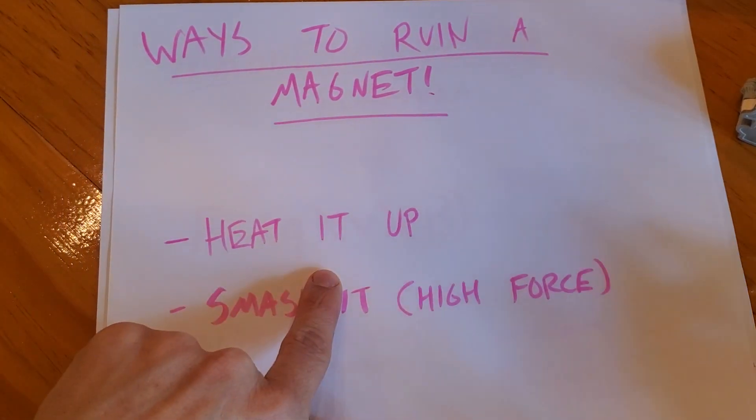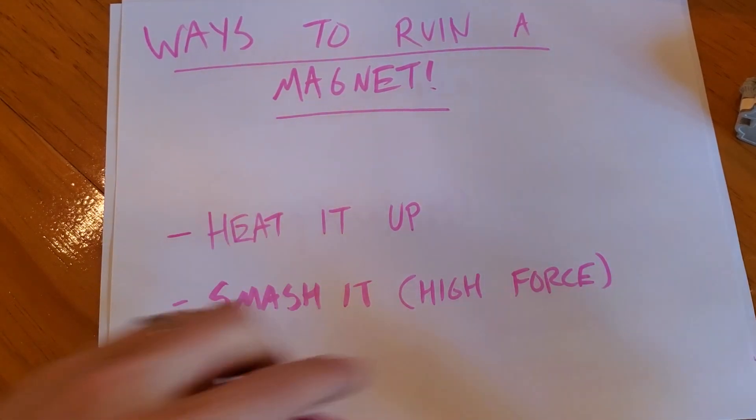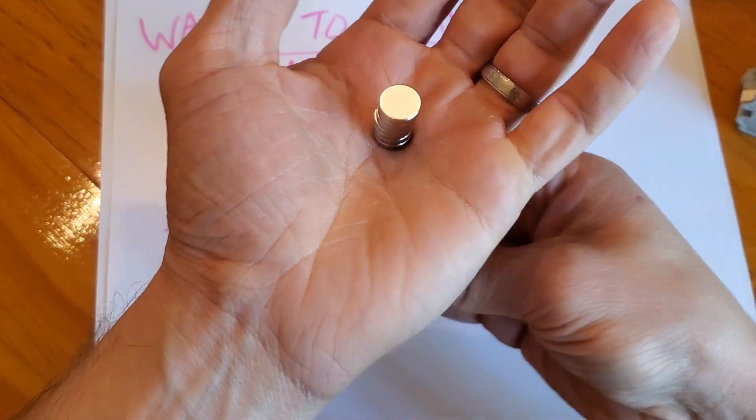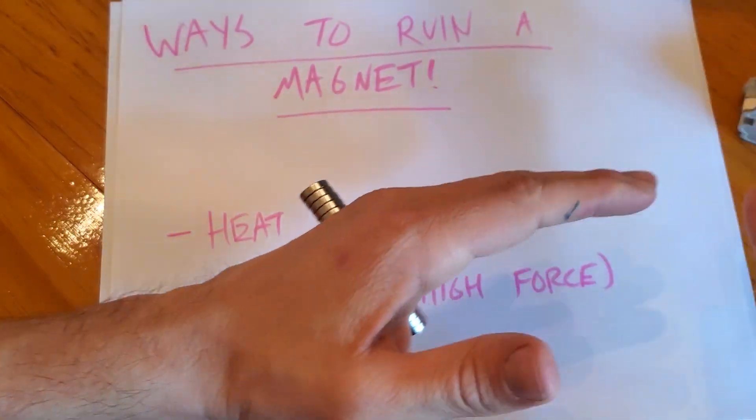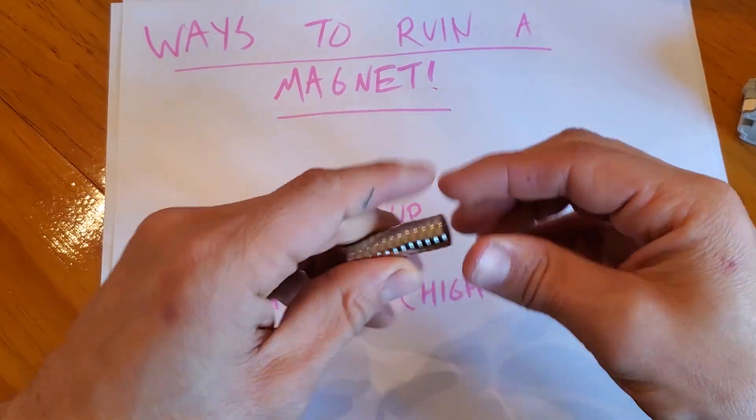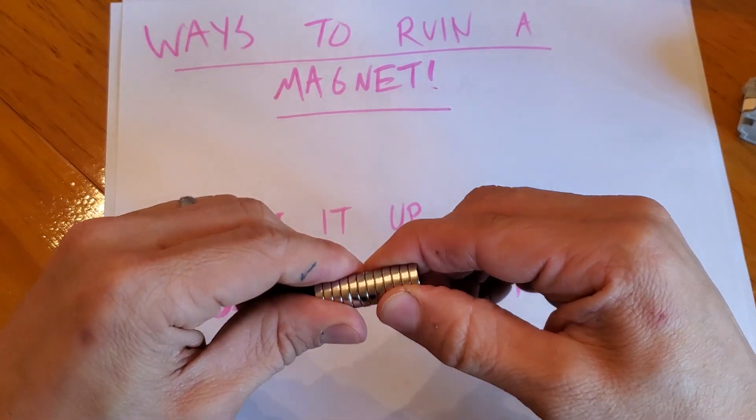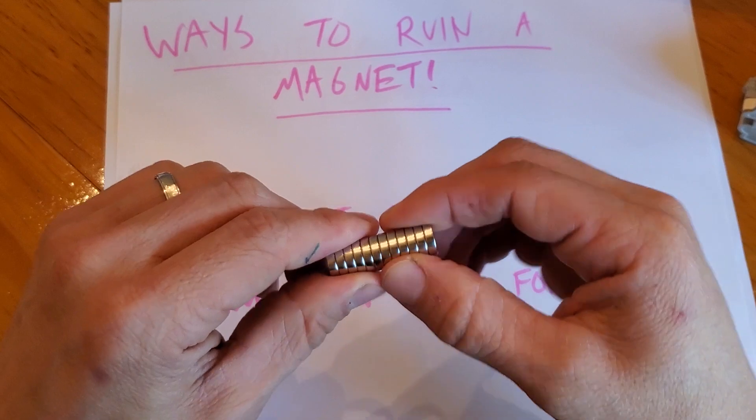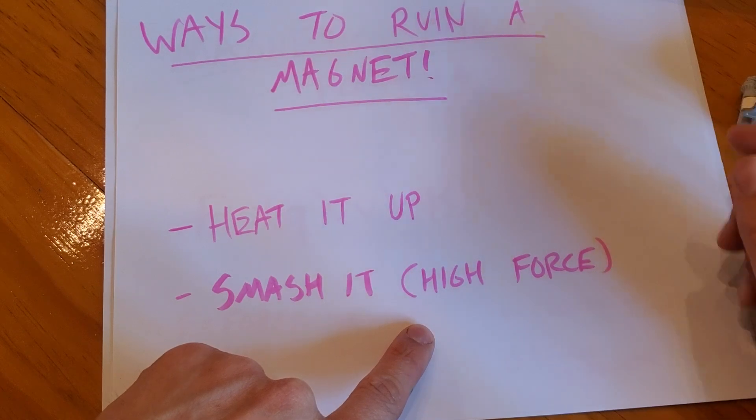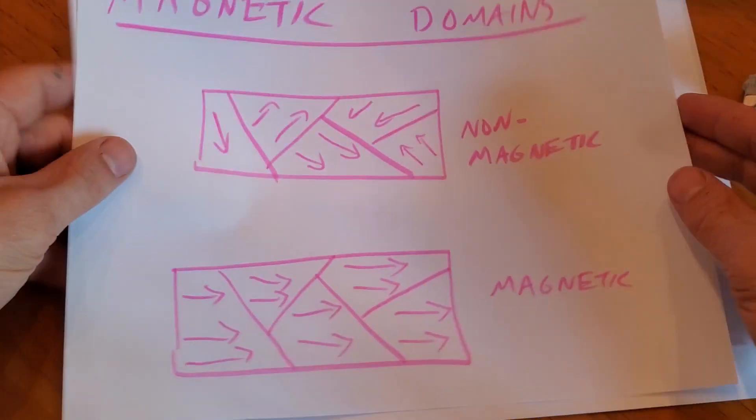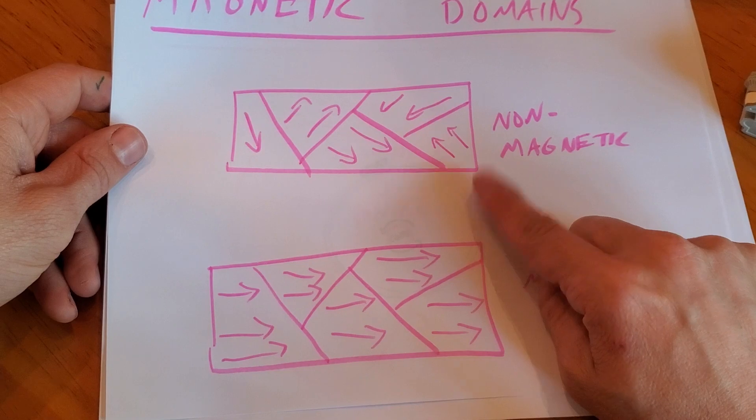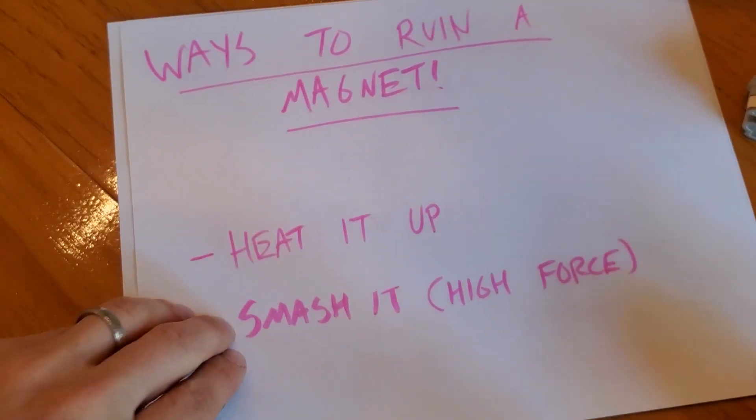Ways to ruin a magnet: two main ways you can heat them up or you can smash them with high force, high impact. These magnets right here are very powerful. If I were to heat these up with a blowtorch or put them in an oven and bake them for a while or just under a high heat source, they would be ruined. If I were to take these and impact them with a hammer or something like that, smash them up, I would ruin the magnet. It goes back to our domains here. When you smash them or heat them up, you cause those electrons to go in different directions, therefore losing its magnetic property.